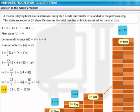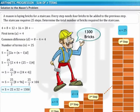After simplifying, you get S equals 1,300. Therefore, the Mason requires a total of 1,300 bricks to construct a staircase of 25 steps.